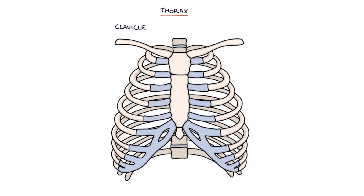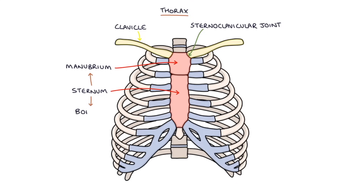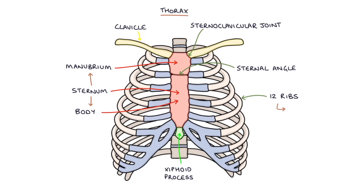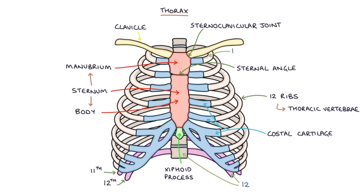Next let's move on to the thorax. At the top of the thorax is the clavicle, which attaches to the sternum at the sternoclavicular joint. The top part of the sternum is called the manubrium, which attaches to the body of the sternum at the sternal angle. At the very end of the sternum there is a small bone called the xiphoid process. There are 12 ribs, one for each thoracic vertebra, labelled 1 to 12 corresponding to the vertebrae they attach to. The costal cartilages connect the ribs to the sternum. The 11th and 12th ribs do not connect to costal cartilage or to the sternum, and they are called floating ribs.